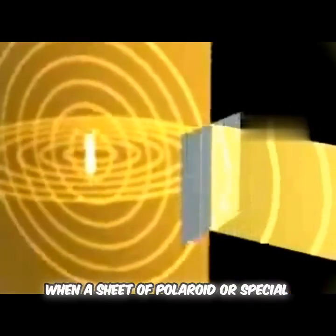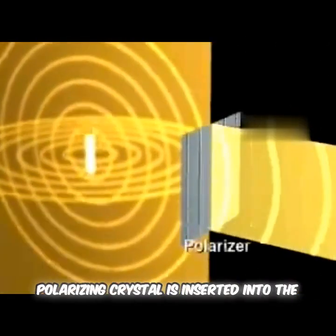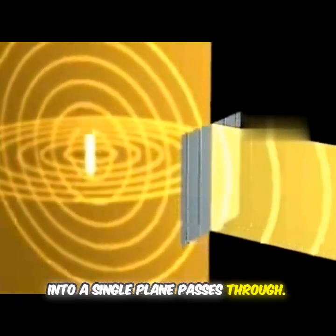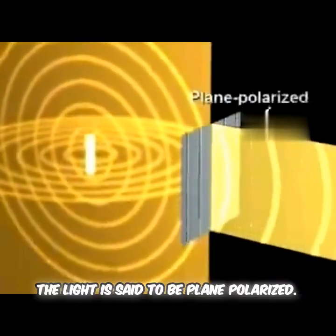When a sheet of polaroid, or special polarizing crystal, is inserted into the non-polarized beam, only light that moves into a single plane passes through. The light is said to be plane polarized.